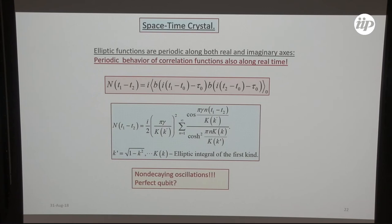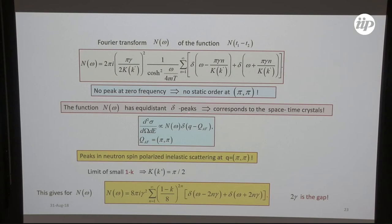These non-decaying oscillations, one can speak of perfect qubit. In frequency-time, one has the sum of delta functions. And what is important, it is sum over n from unity to infinity, and there is no elastic scattering. Elastic scattering, delta function at omega equal to zero doesn't exist. Therefore there is no static order, and this would mean in neutron scattering that I have this function without static order and with q equals to magnetic q.